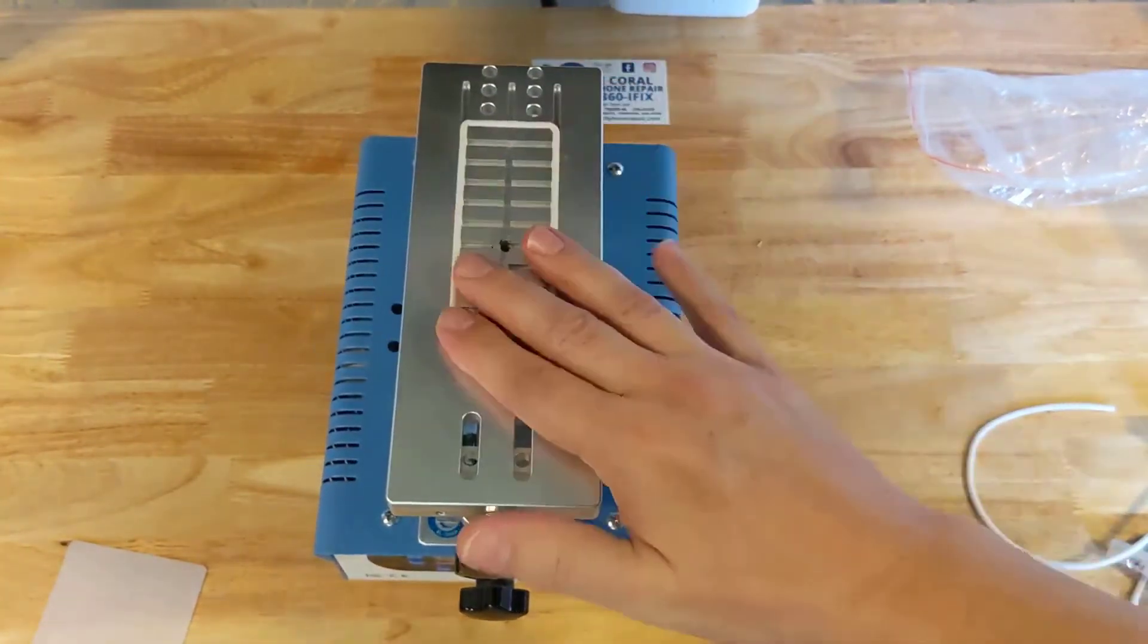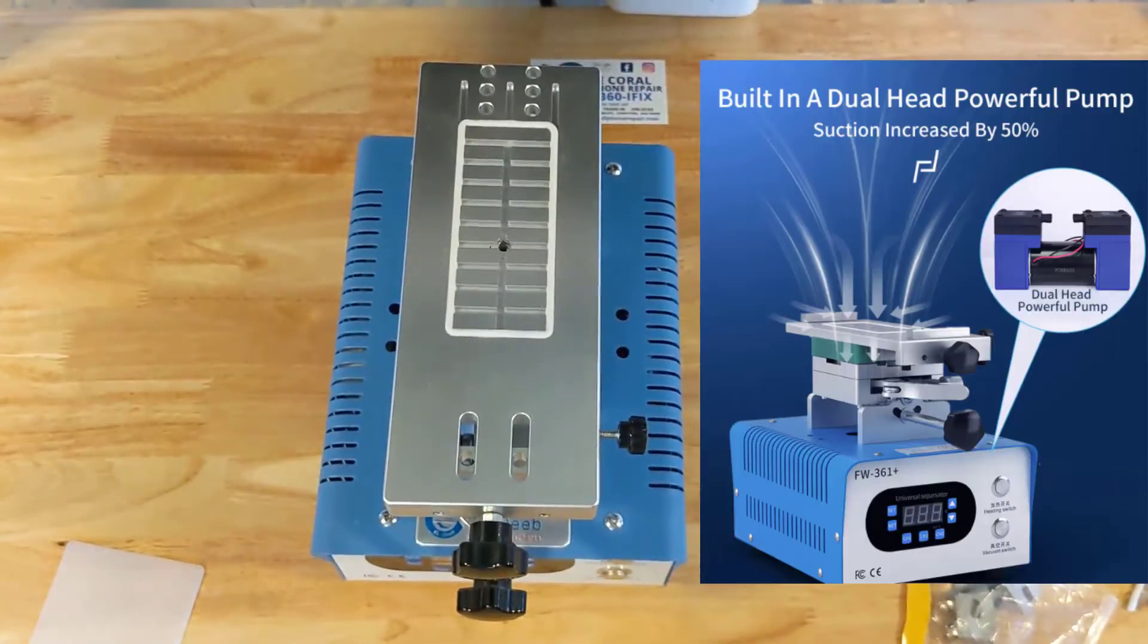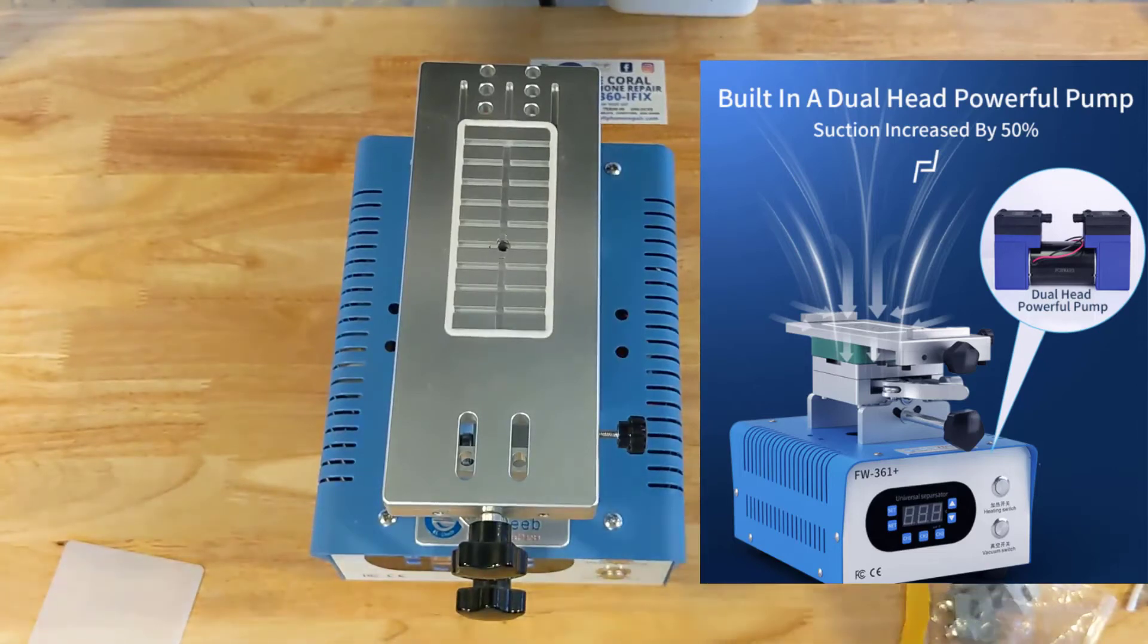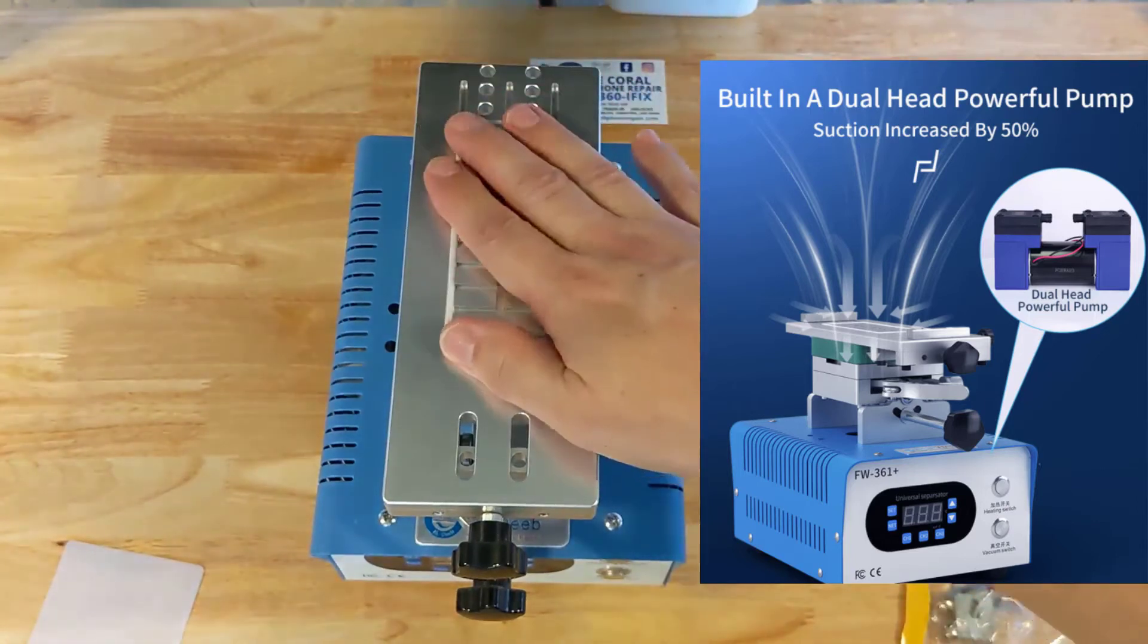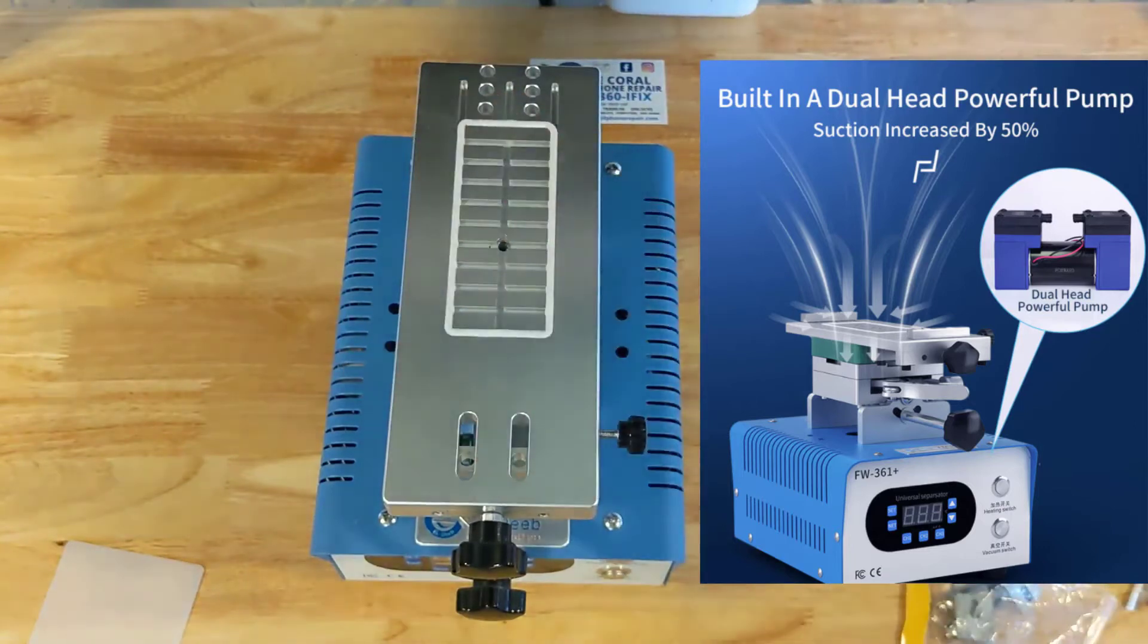One of the features, another feature that this does have is the pump. So now with this machine, you're going to have a better pump, a dual head powerful pump. This surface right here is going to have a better suction to it because of the dual head powerful pump. This is something new with Forward and we're going to be putting that to the test as well.